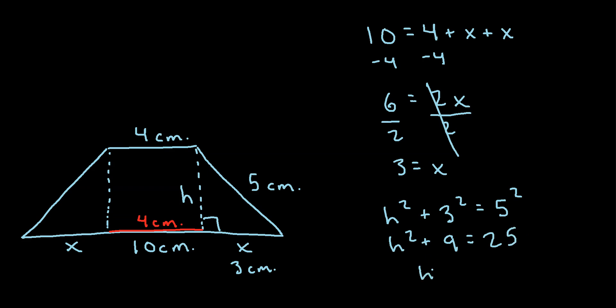If we subtract 9 from each side, we'll get h squared is equal to 25 minus 9 is 16. And to solve for h, we just take the square root of each side. So the square root of h squared, that's h, I'll write that right here, is equal to the square root of 16 is 4.